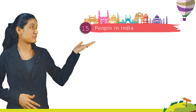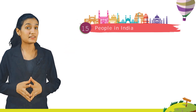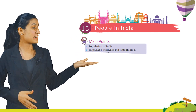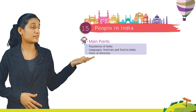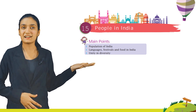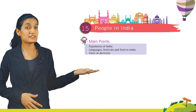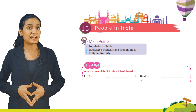Hello Class 4 students, I hope you are all doing well. Today we are going to start with Chapter 15, that is 'People in India.' The main points are: population of India, languages, festivals and food in India, and unity in diversity. So let's start.